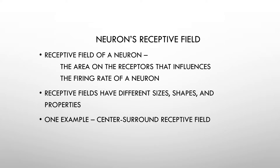Receptive fields have different sizes, shapes, and properties, and since we're starting in the retina, we're going to start very simple with the center-surround receptive field. The retinal ganglion cells in the retina, as well as the cells in the lateral geniculate nucleus, have this really simple center-surround receptive field.